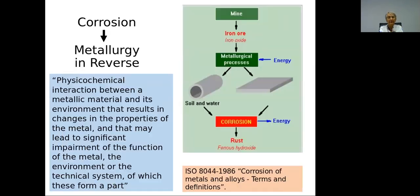Corrosion is a kind of physical-chemical interaction between metallic material and environment. In a simple way, we can imagine that we have iron ore, we add energy, make a metallurgical process, and we get the metal clean and shiny. With time, getting in contact with soil and water, the metal tries to come back to the situation of a metal ore — and this is corrosion.